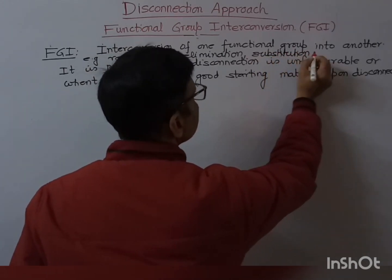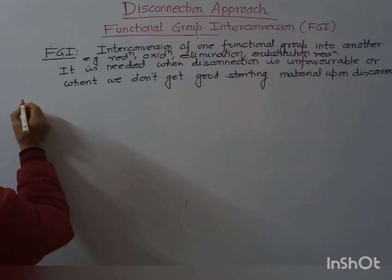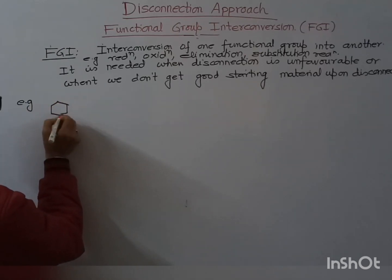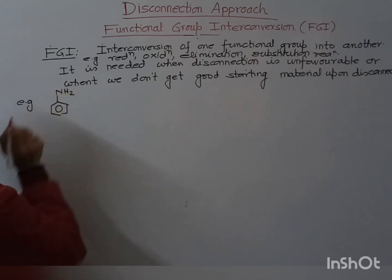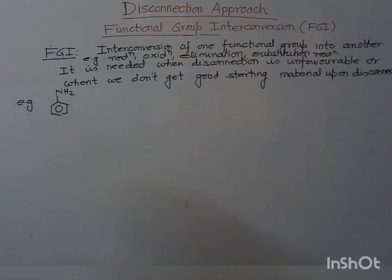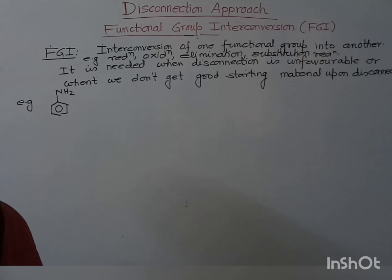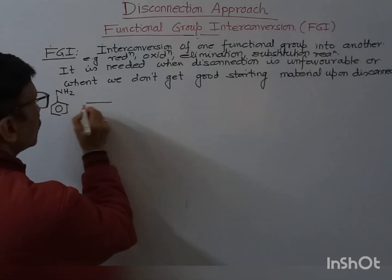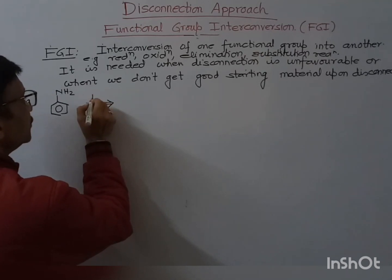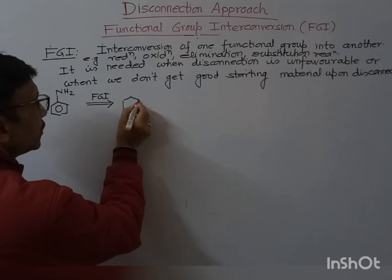By these various reactions, we can convert one functional group into another. For example, suppose if you have an aniline group and you disconnect it, you will not get good or workable starting material. So when you see the amino (NH2) group, you should first do the FGI — convert this NH2 group into an NO2 group.